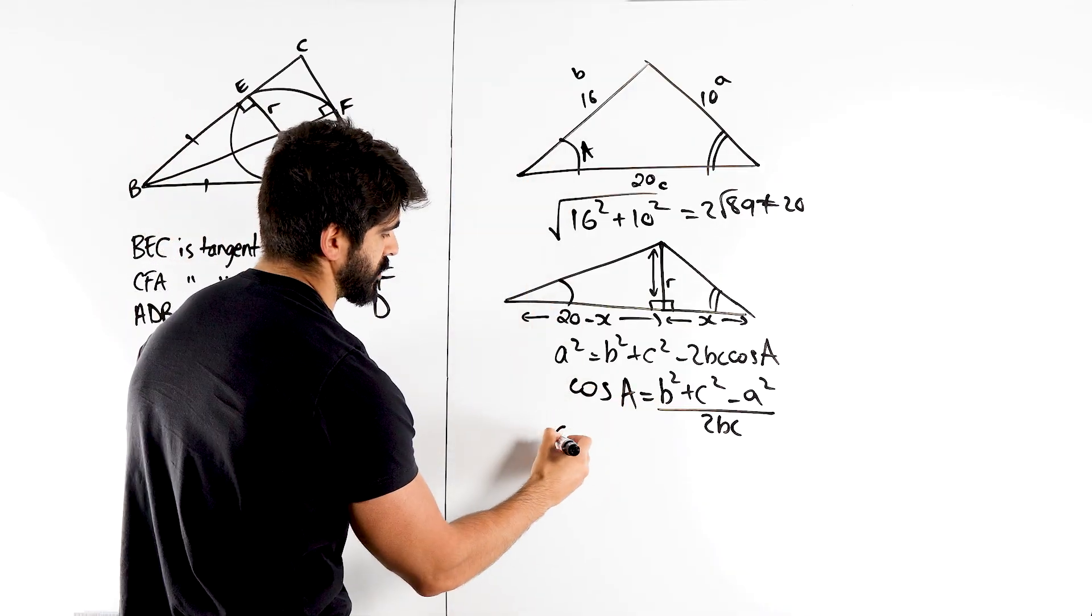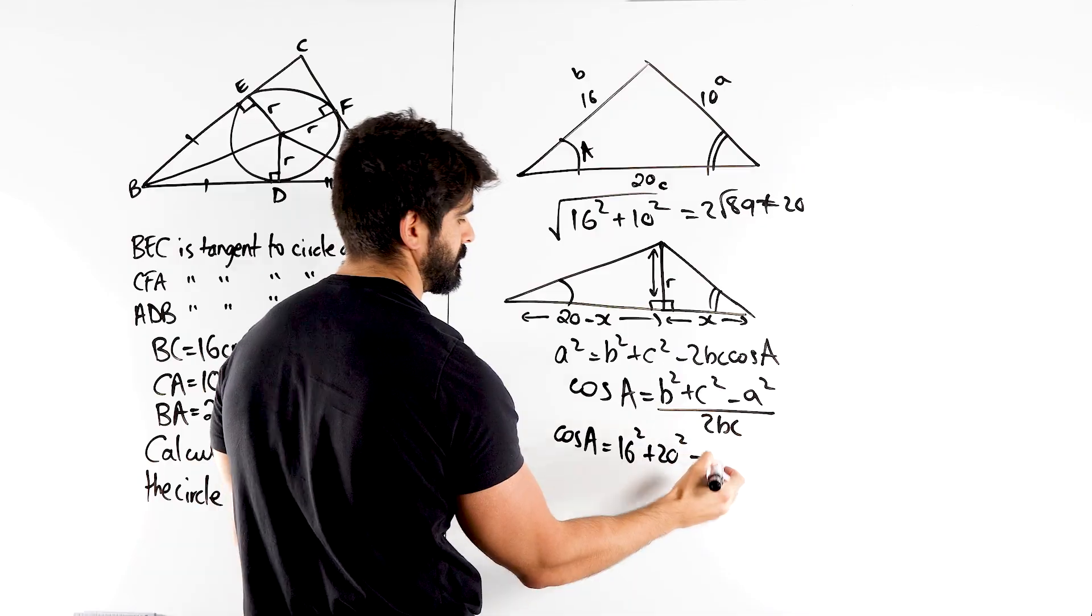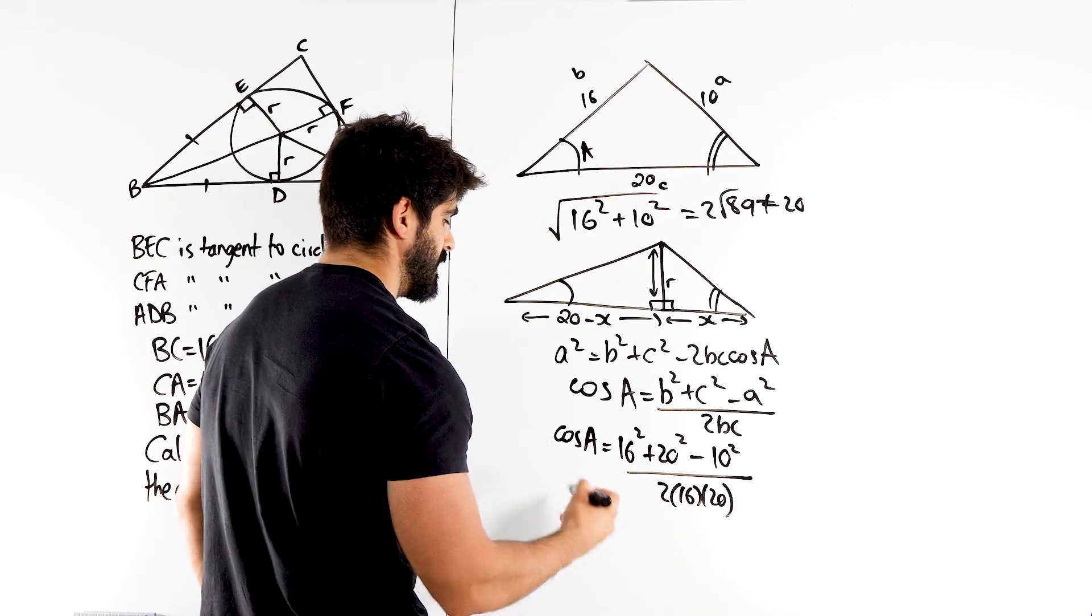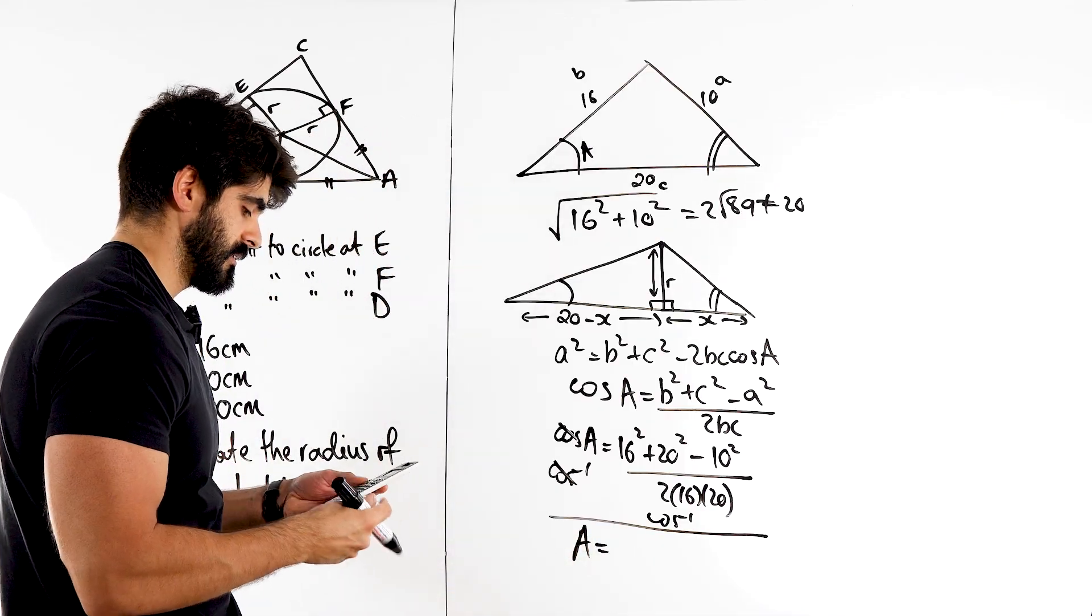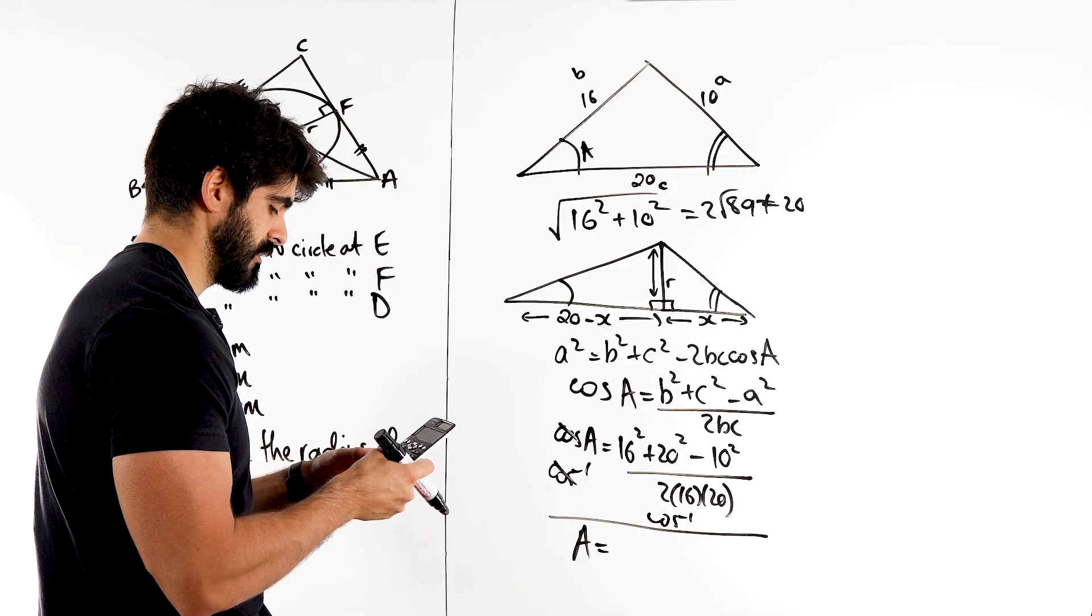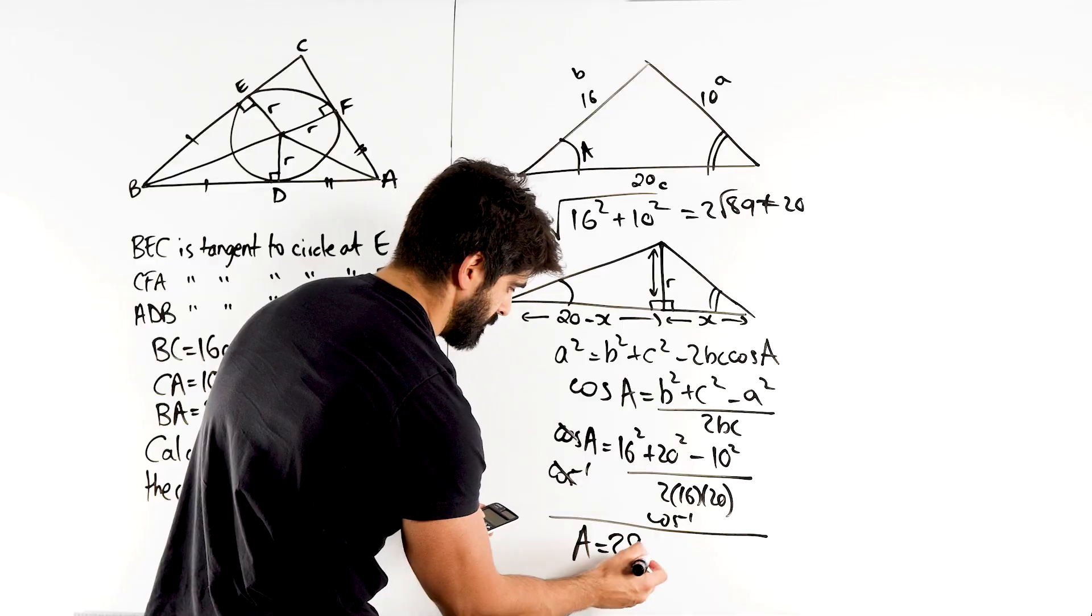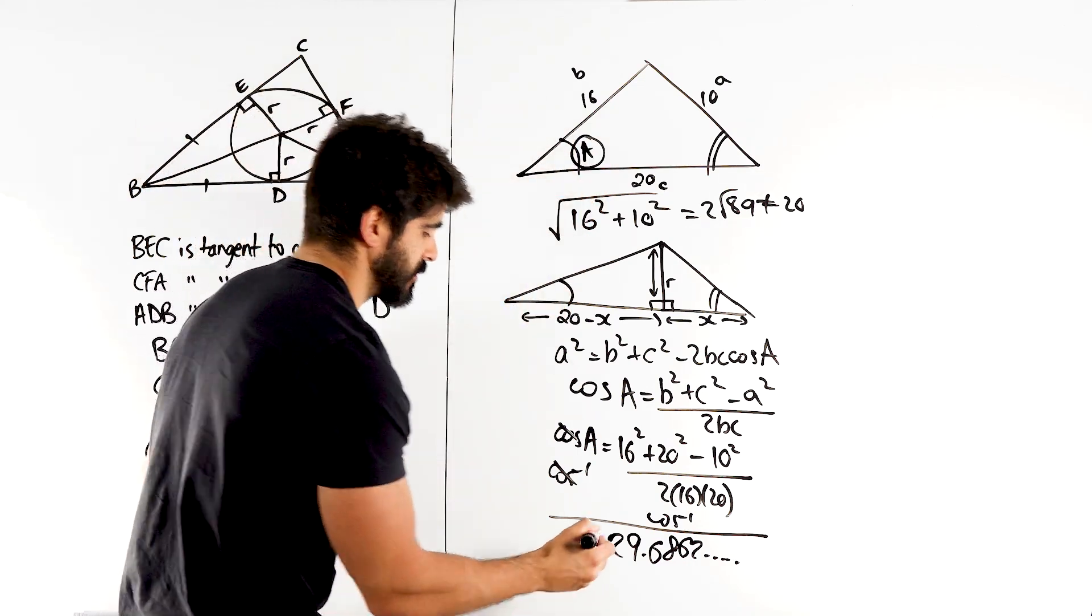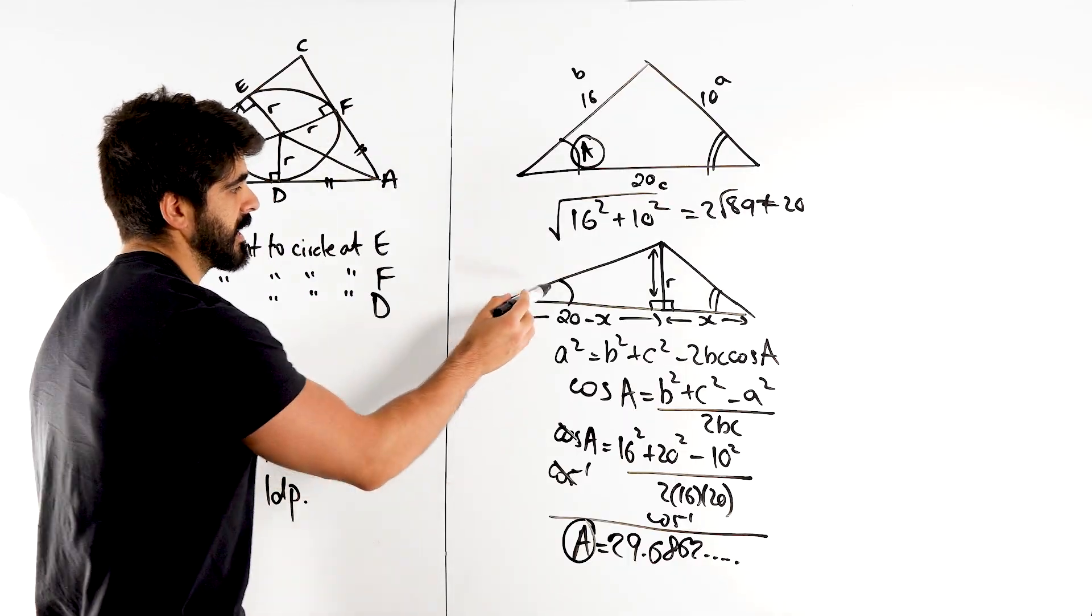So we're saying cos of this angle cos of a is 16 squared plus 20 squared minus a squared over 2, 16 and 20. And then we're going to do inverse cos of all of that. So we get that angle is. Now I'm going to do something as well here. Maybe if you've been watching me long enough, you'll probably know. I'm going to store these values, especially my GCSE students. They all know that I love to store a value. This is going to give me 29.6862 dot dot dot. Okay, so I'm going to store that as a. So on my calculator, I press s, t, o and a.